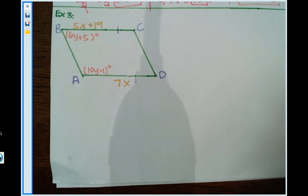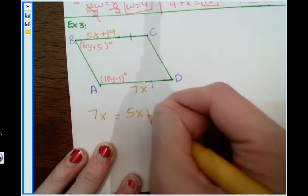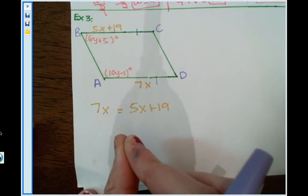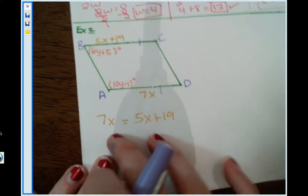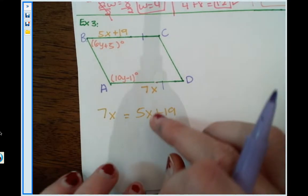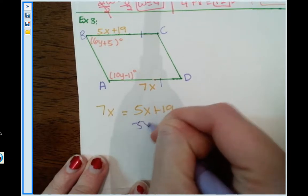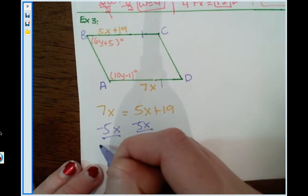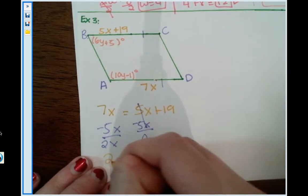So let's start solving. So I know that 5x plus 19 should equal 7x. So 7x equals 5x plus 19. Let's start solving this for x. So first we need to bring our x's together. I'm going to bring the 5x over to meet the 7x. So how do we bring 5x to the other side? You do subtract that on both sides. So 7x minus 5x is 2x and 5x minus 5x cancels out. So I'm left with 2x equals 19.